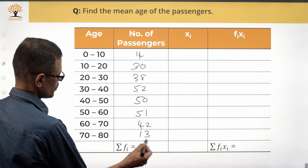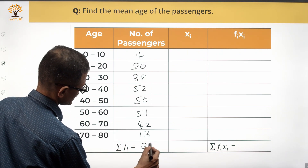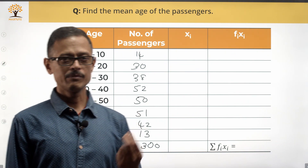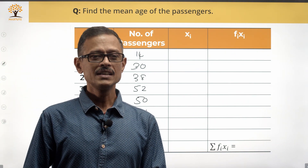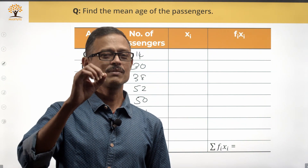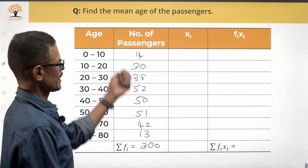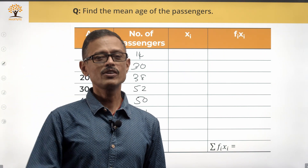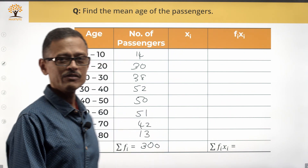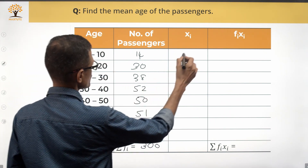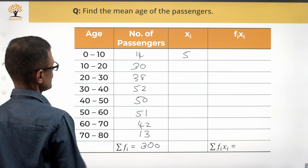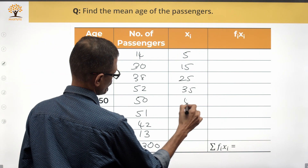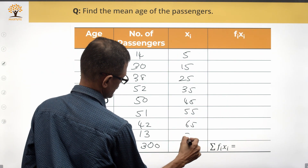The cumulative of all frequencies is 300, which confirms our total. To compute the mean using the formula mean = Σ(fi × xi) / Σfi, we need xi — the midpoint of each class interval. These are: 5, 15, 25, 35, 45, 55, 65, and 75 respectively.